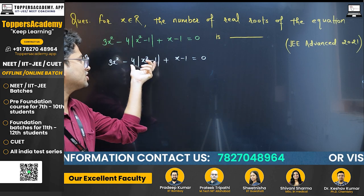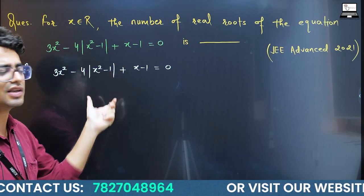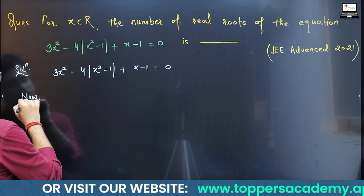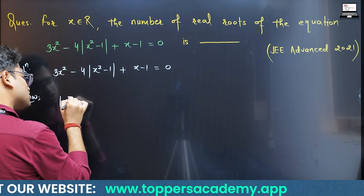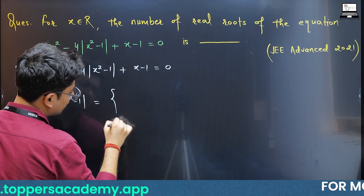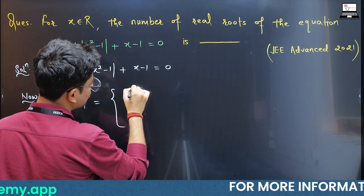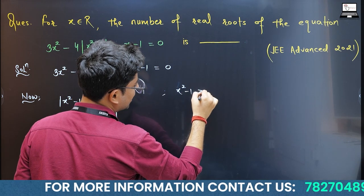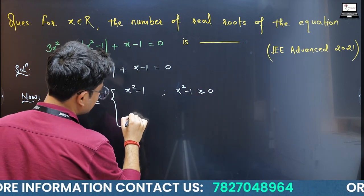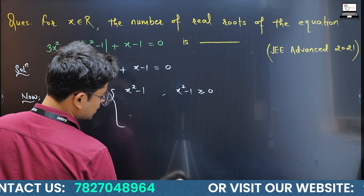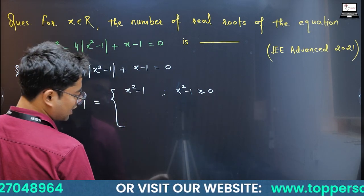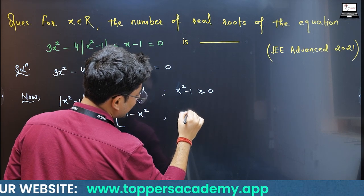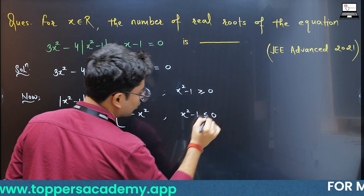Here we have 2 cases because we have a modulus. If you observe, mod of (x² - 1) equals x² - 1 whenever x² - 1 ≥ 0, and it equals -(x² - 1), which is 1 - x², whenever x² - 1 ≤ 0.